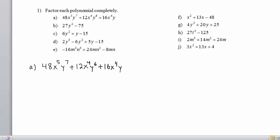We will factor this polynomial by finding its greatest common factor. First we consider the coefficients: 48, 12, and 16. The largest number that divides each of those coefficients without remainder is 4.